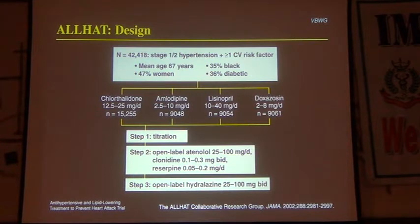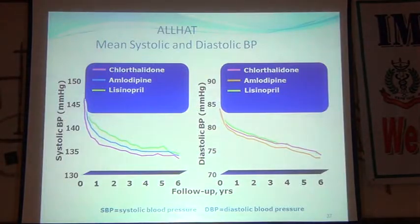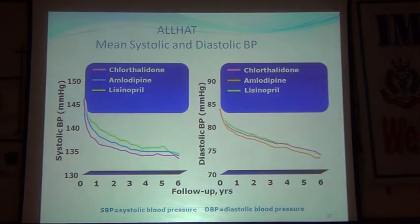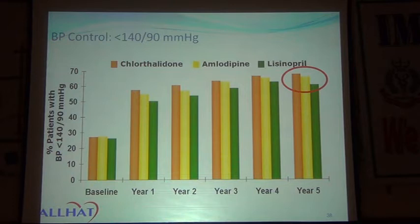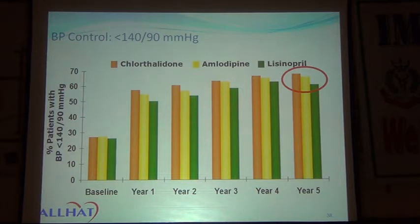The three remaining ALLHAT groups were compared with follow-up at 1, 3, 6, 9, 12 months and every four months for eight years. Both systolic and diastolic BP were reduced. Comparing the three molecules at year five, chlorthalidone achieved 4 to 7 percent better control of blood pressure than the other two drugs.